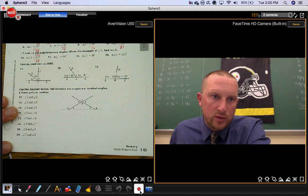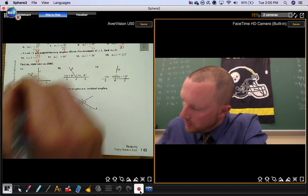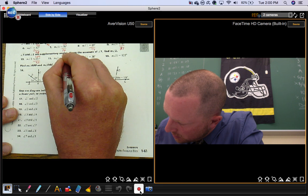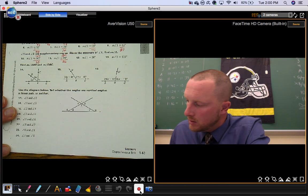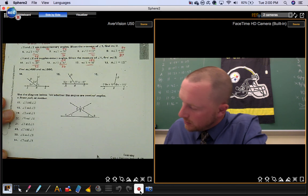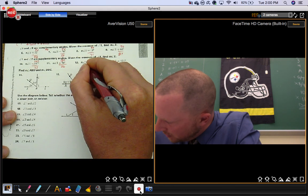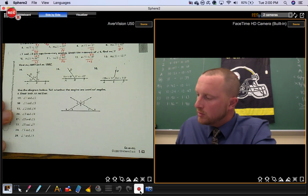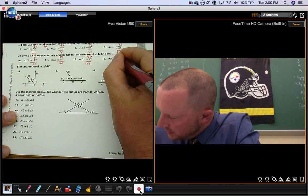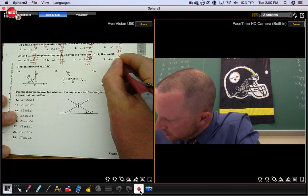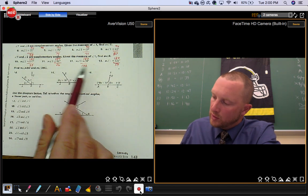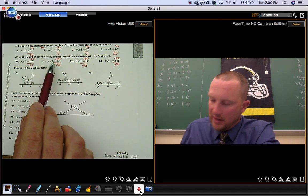So in number 10, angle 2 would be 33 degrees. In number 11, you'd have 86. In number 12, you'd have 142. In number 13, you'd have 59. So those angles there are what you would call the supplement of the angle that's given.